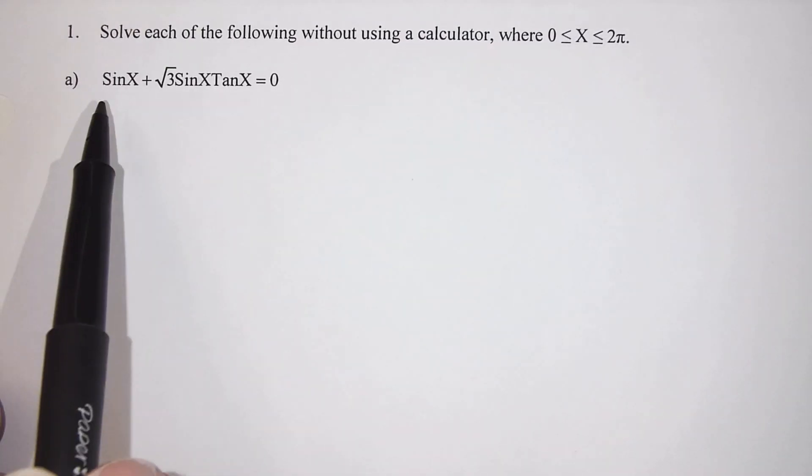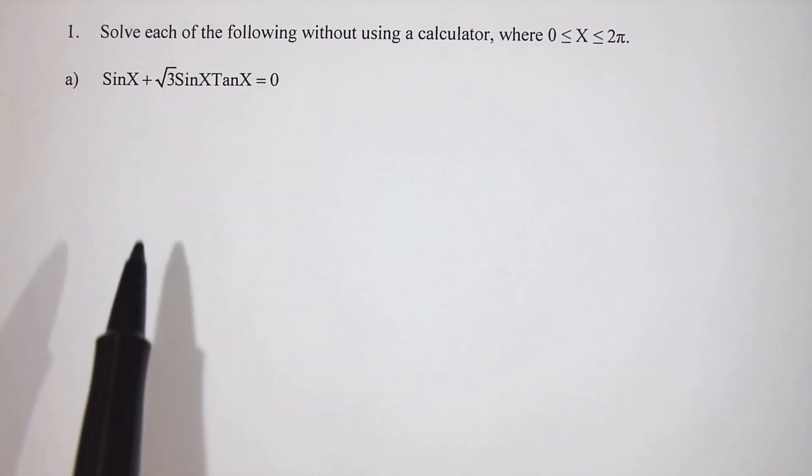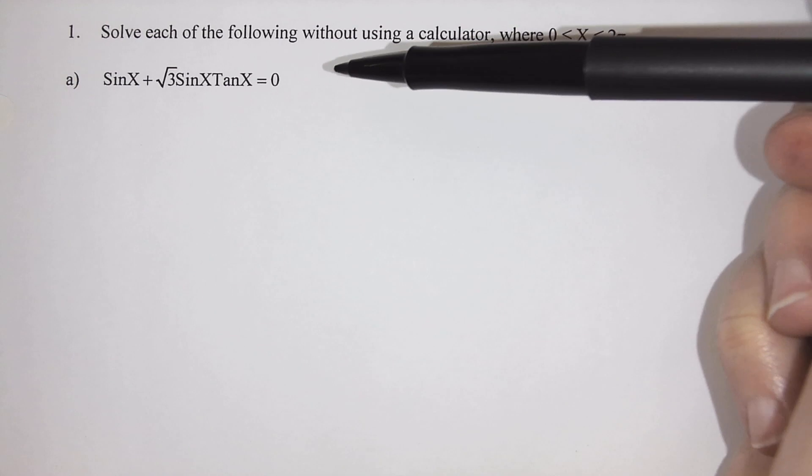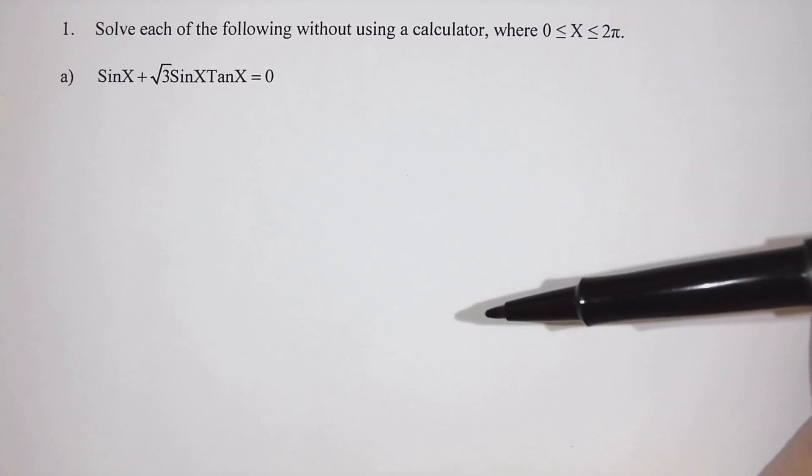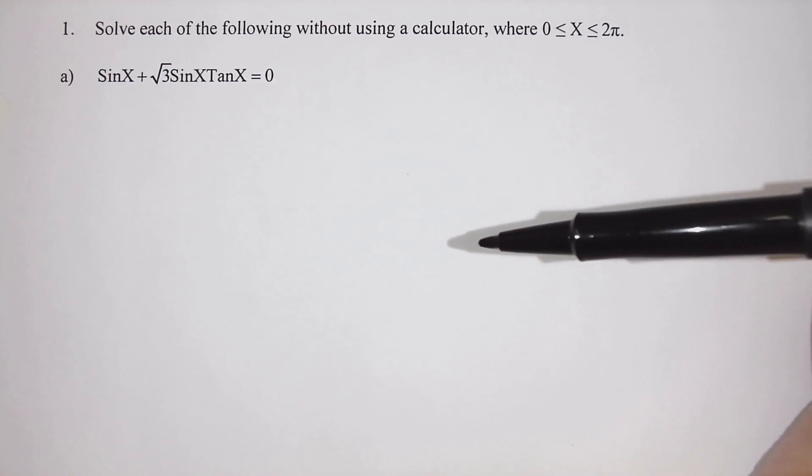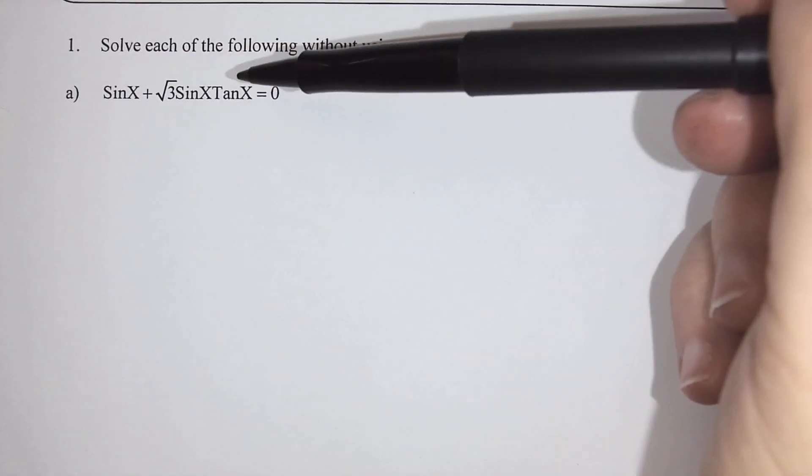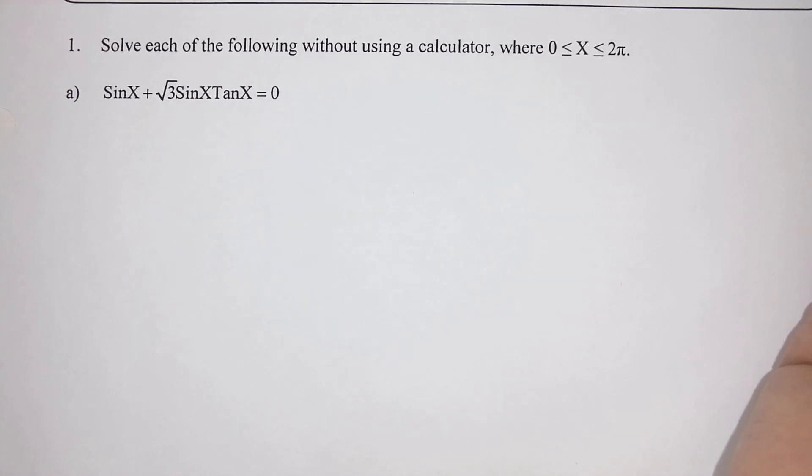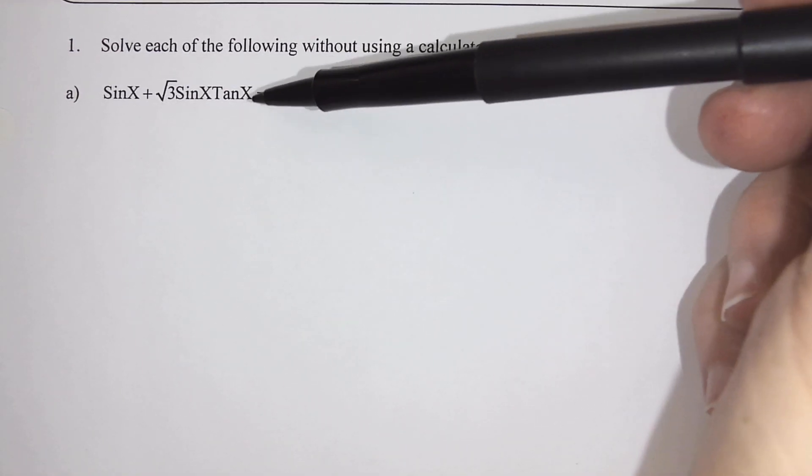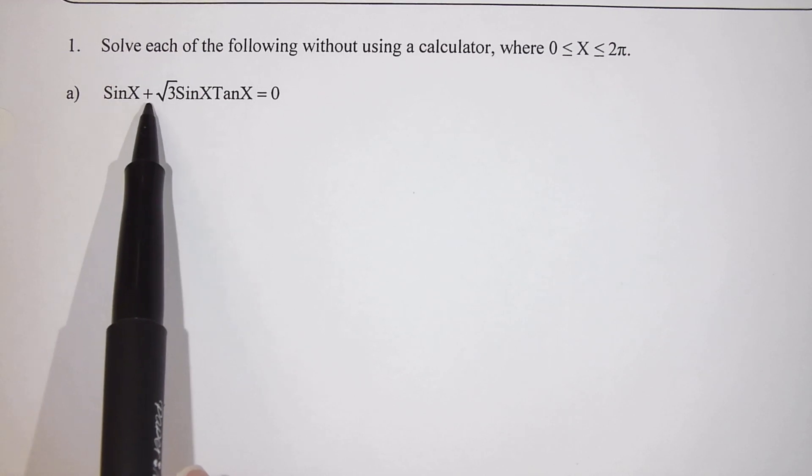We're going to take a look at our first question here. I have sin(x) + √3·sin(x)·tan(x) = 0 and we want to solve. Anytime we're solving we have three options: we can solve by rearranging, we can solve by factoring, which is the title of this handout, or we can solve by quadratic formula. Now if I wanted to rearrange, that only works if I have one trig ratio. I currently have three and two of them are different, so I would not rearrange for this question.